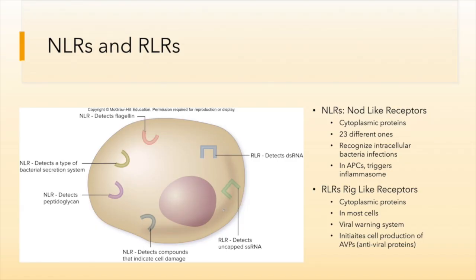The other two classes — NOD-like receptors (NLRs) and RIG-like receptors (RLRs) — are both internal, found in the cytoplasm of sentinel cells as well as phagocytic cells such as macrophages, dendritic cells, and neutrophils. The most important phagocytic cells for TLR signaling are dendritic cells and macrophages, because their cellular response becomes critical when they move into the lymphatic system to activate the adaptive immune response.